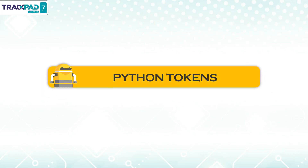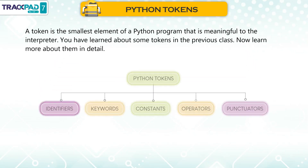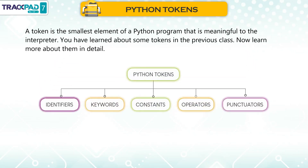Python Tokens. A token is the smallest element of a Python program that is meaningful to the interpreter. You have learned about some tokens in the previous class. Now learn more about them in detail.